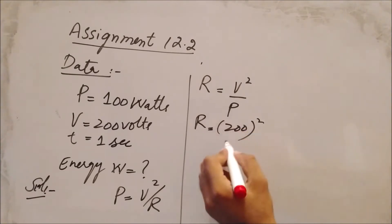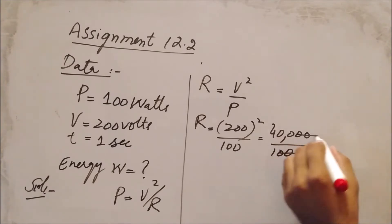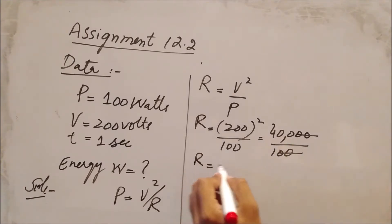With P = 100, the square of 200 is 40,000 divided by 100, so the resistance for the whole coil is 400 ohms.